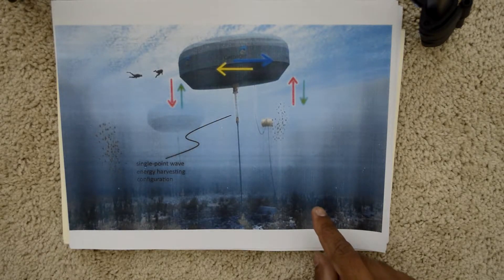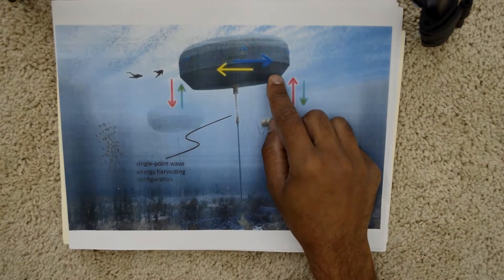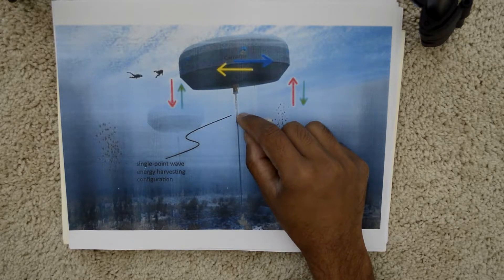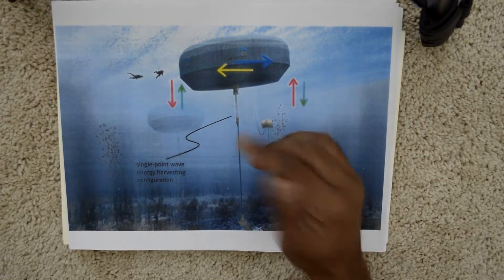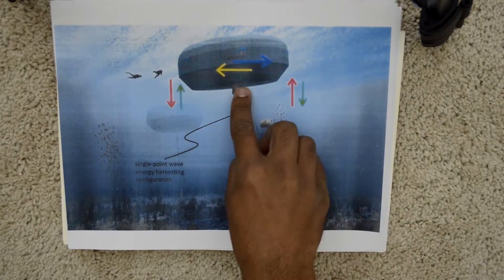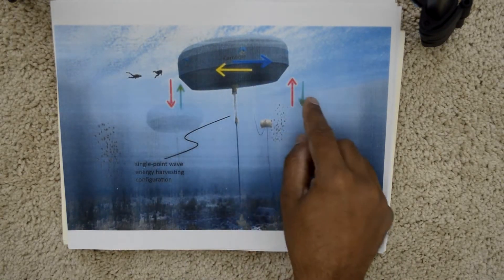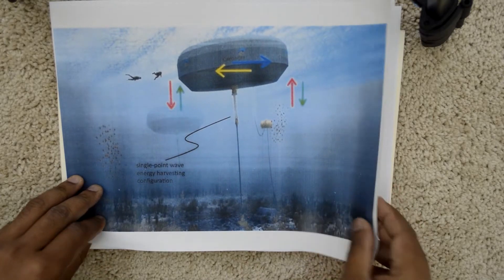This is a commonly used configuration where one float is attached to one wave energy harvesting mechanism to the ground. As the entire unit moves upward it will actuate, but if it moves sideways, it won't pull it. If it does rocky movement, it won't work.